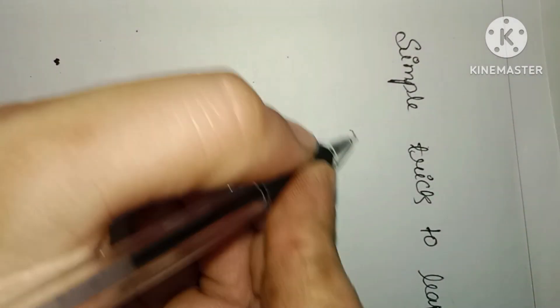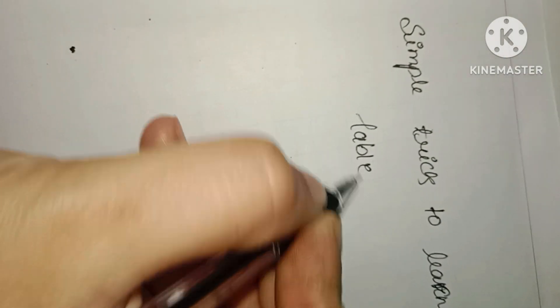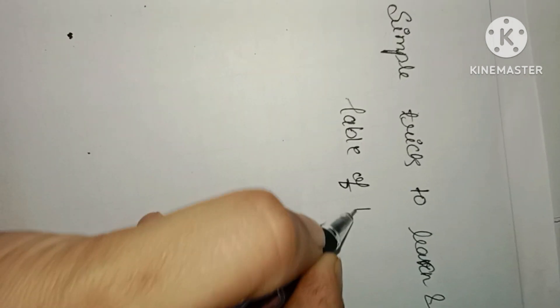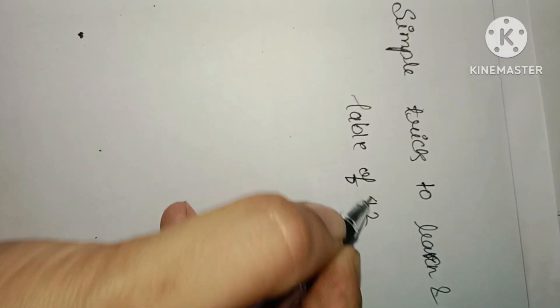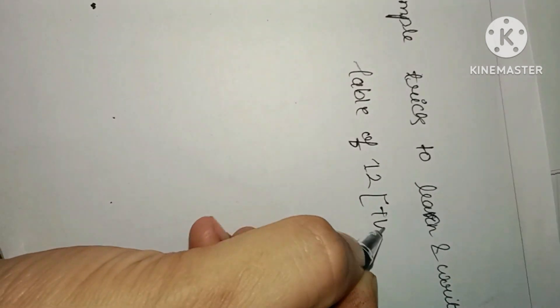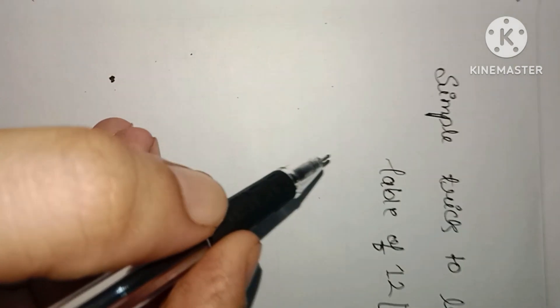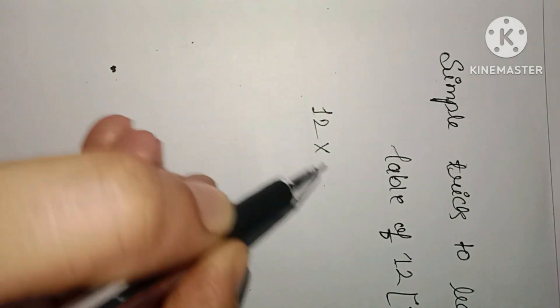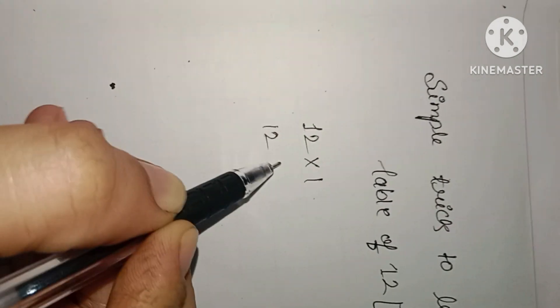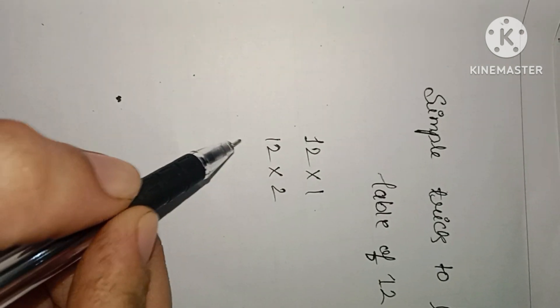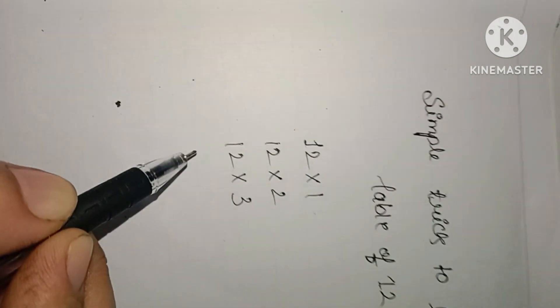Only you have to remember the table of 2 while writing the table of 12. The only thing you have to remember is the table of 2. Everyone from class 2 knows the table of 2. Every student knows the table of 2, so only here the child needs to learn the table of 2.